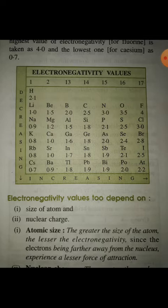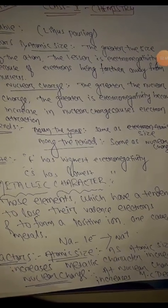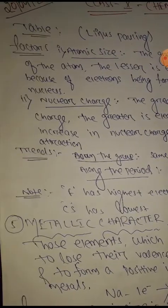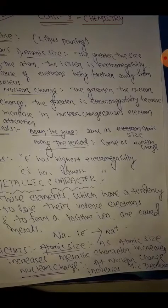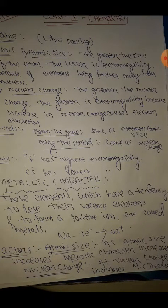Electronegativity increases from bottom to top within a group, and decreases from top to bottom. The reason is atomic size: the greater the size of the atom, the lesser the electronegativity, because electrons are further away from the nucleus. As we move from top to bottom, the number of shells increases, atomic size increases, and the nuclear pull decreases — so atoms tend to lose electrons rather than gain them, decreasing electronegativity.